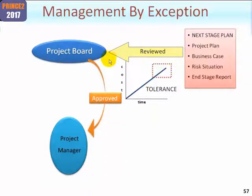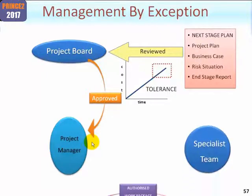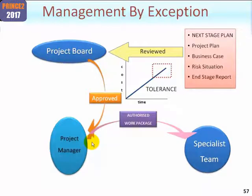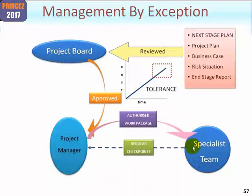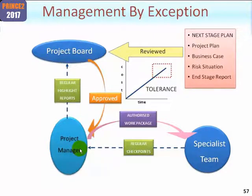The next stage plan is approved and now the project manager is tasked to manage the stage, first of all by giving out authorised work packages from the next stage plan. The specialist team need to agree to that and then work can commence on creating the specialist products. During that period, as laid out in the work package, the team will give the project manager regular checkpoint reports. By the same token, the project manager will give the project board regular highlight reports because of course we are managing by exception.